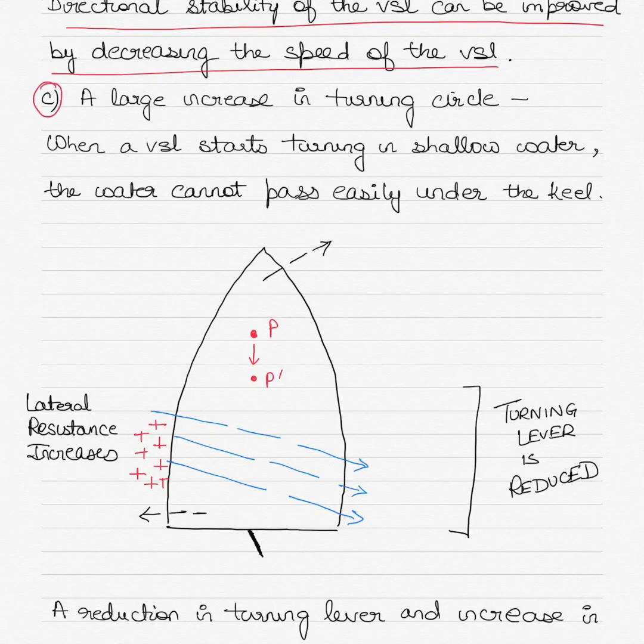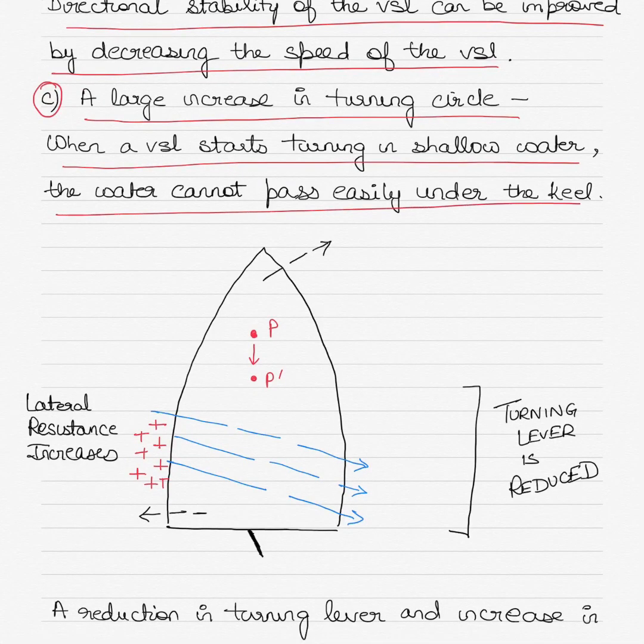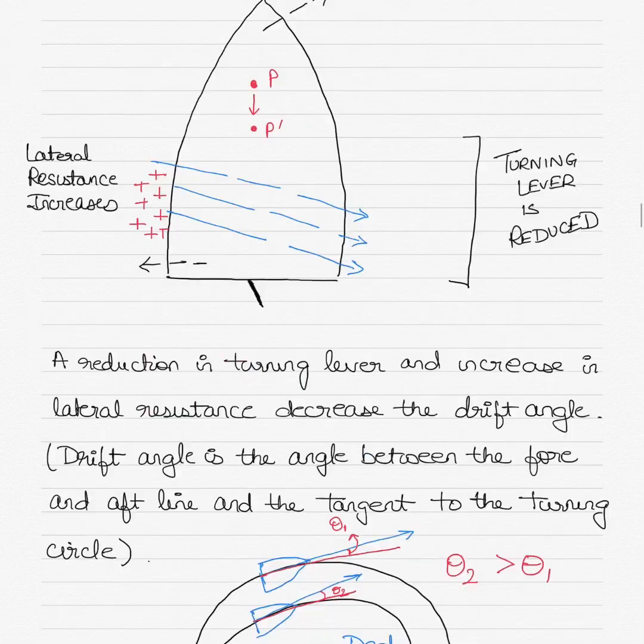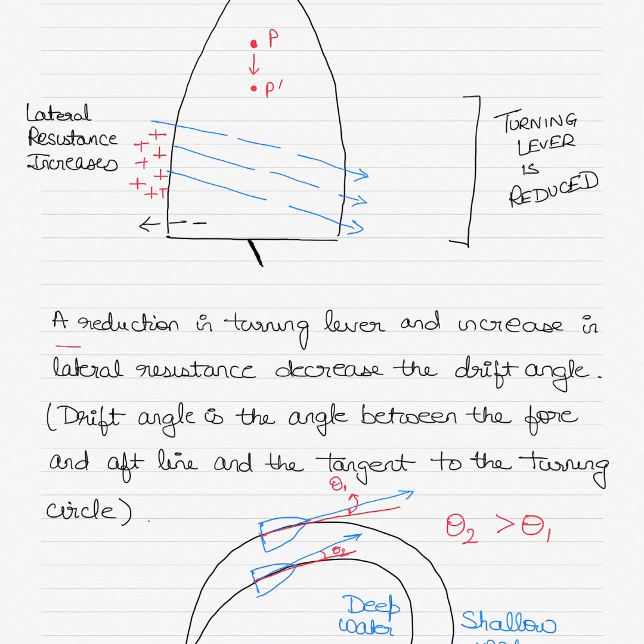Third, a large increase in turning circle occurs when a vessel starts turning in shallow water. The water cannot pass easily under the keel. A reduction in turning lever and an increase in lateral resistance decreases the drift angle.